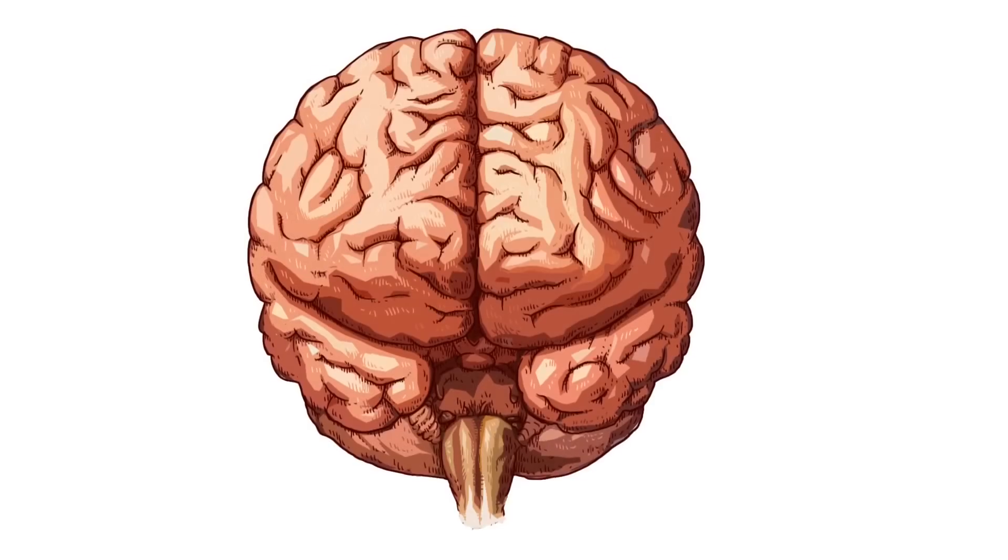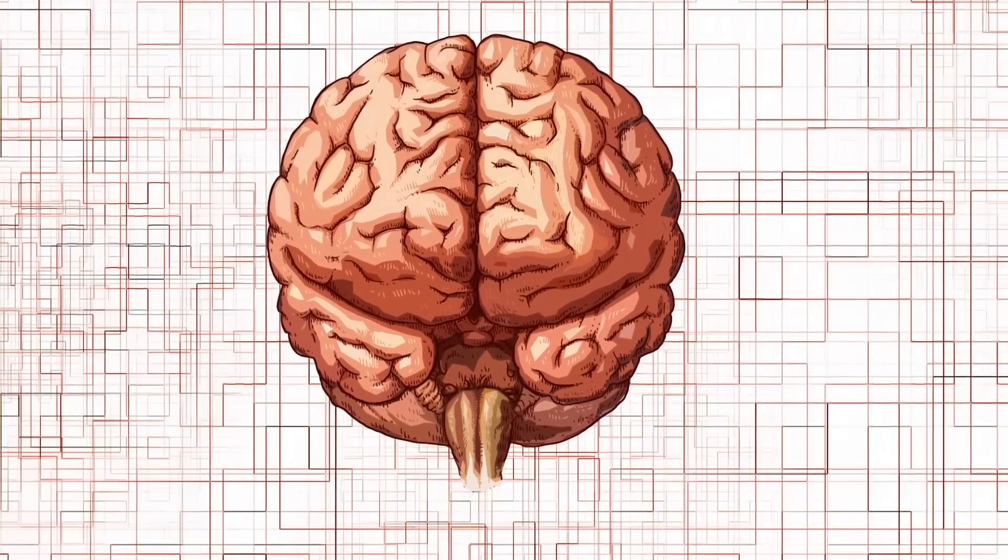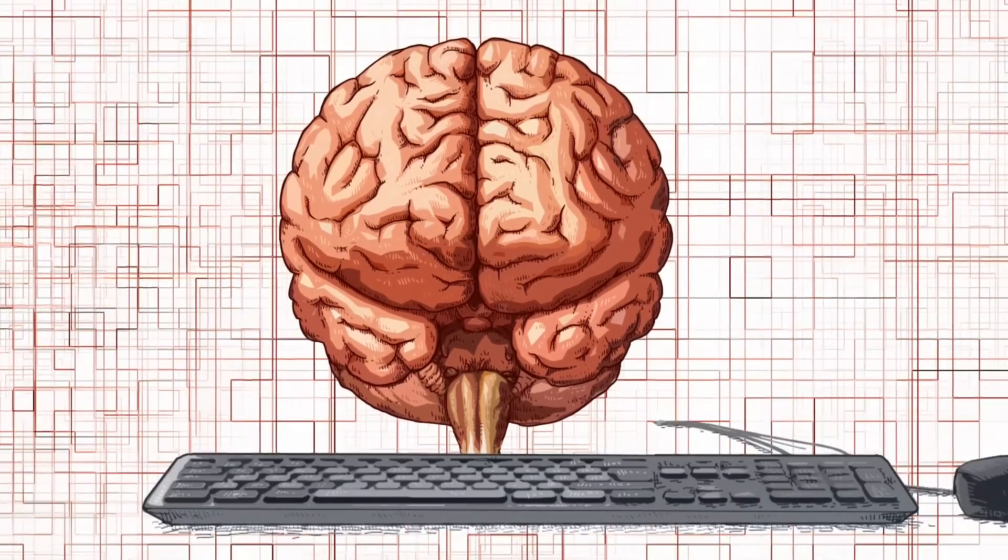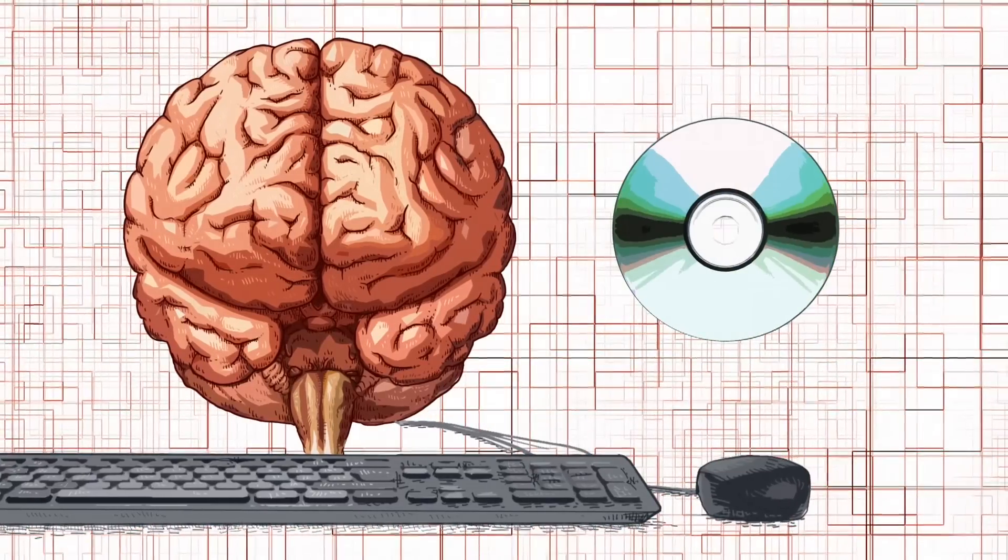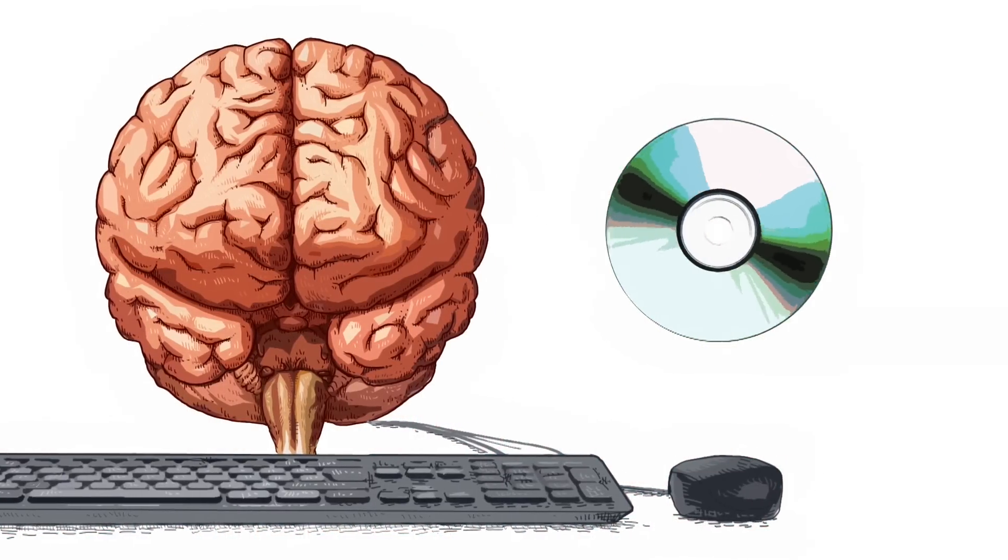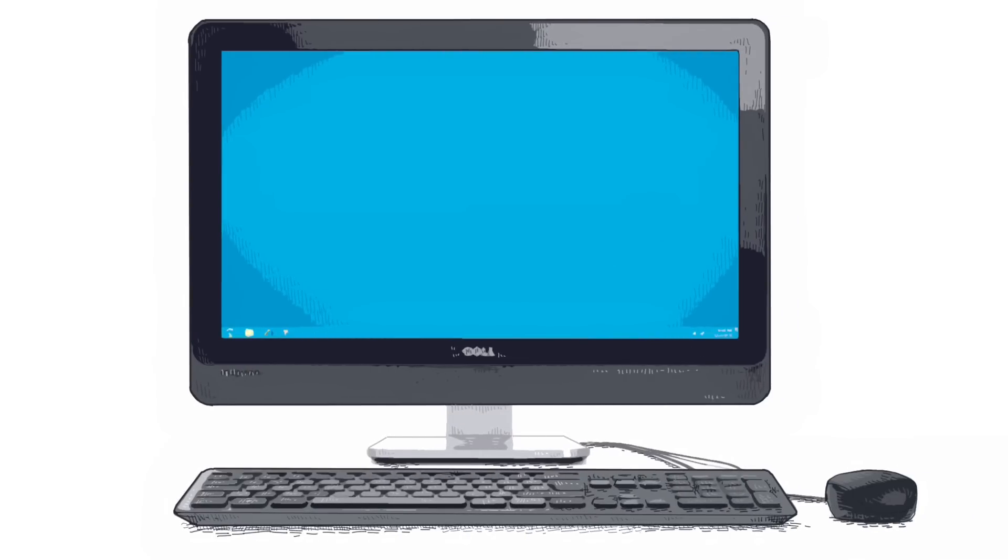It's worth breaking down the different ways this could turn out. First, it's possible that the brain does literally work like a computer. Here we need to separate hardware and software. It's always been clear that the hardware of the brain is completely different from that of a computer.